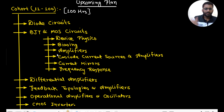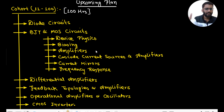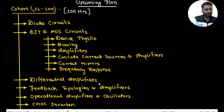We will start with diode circuits, then move to BJT and MOSFET circuits, studying everything from device physics, biasing, amplifiers, current mirrors, frequency response, cascode, and current sources — everything in detail.